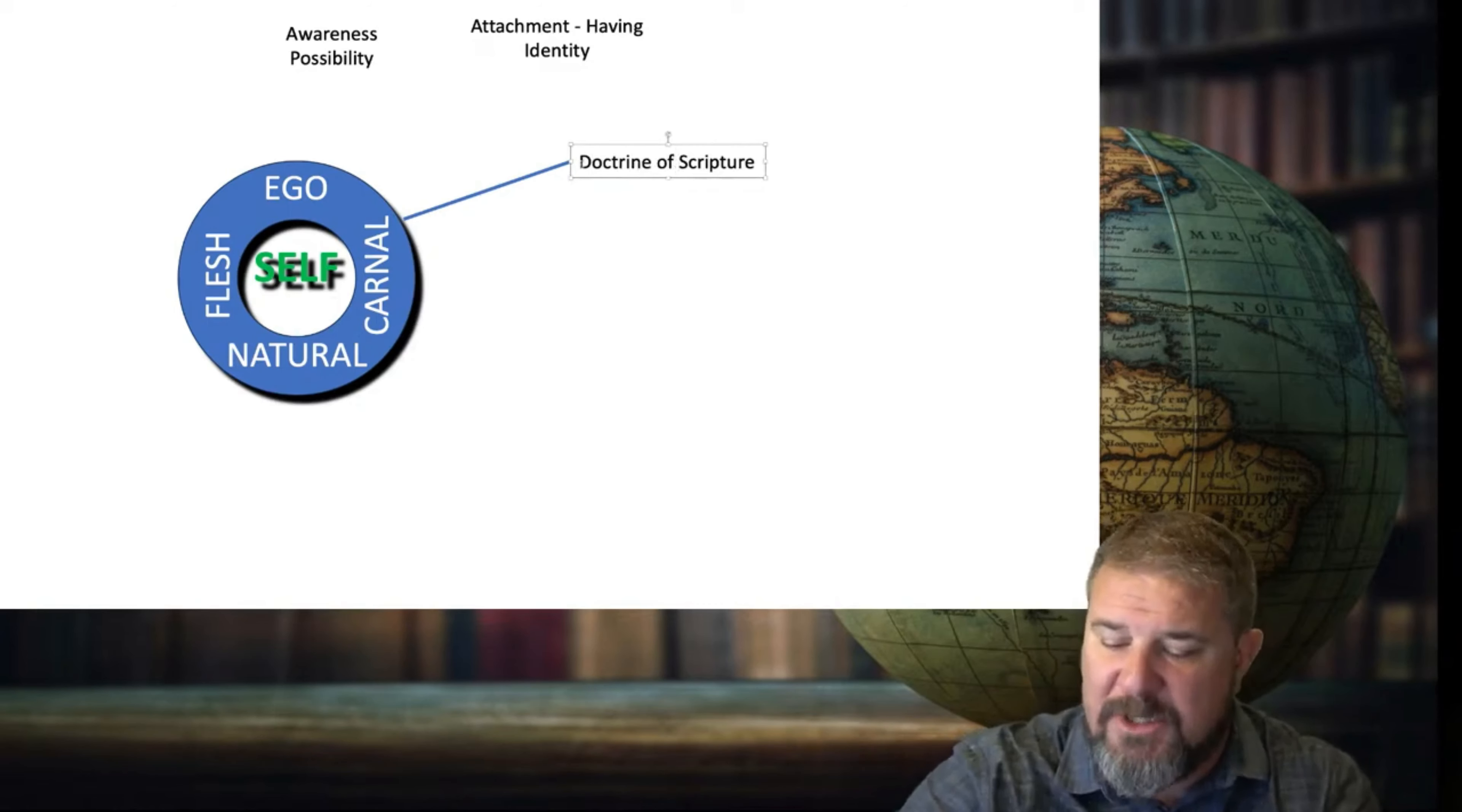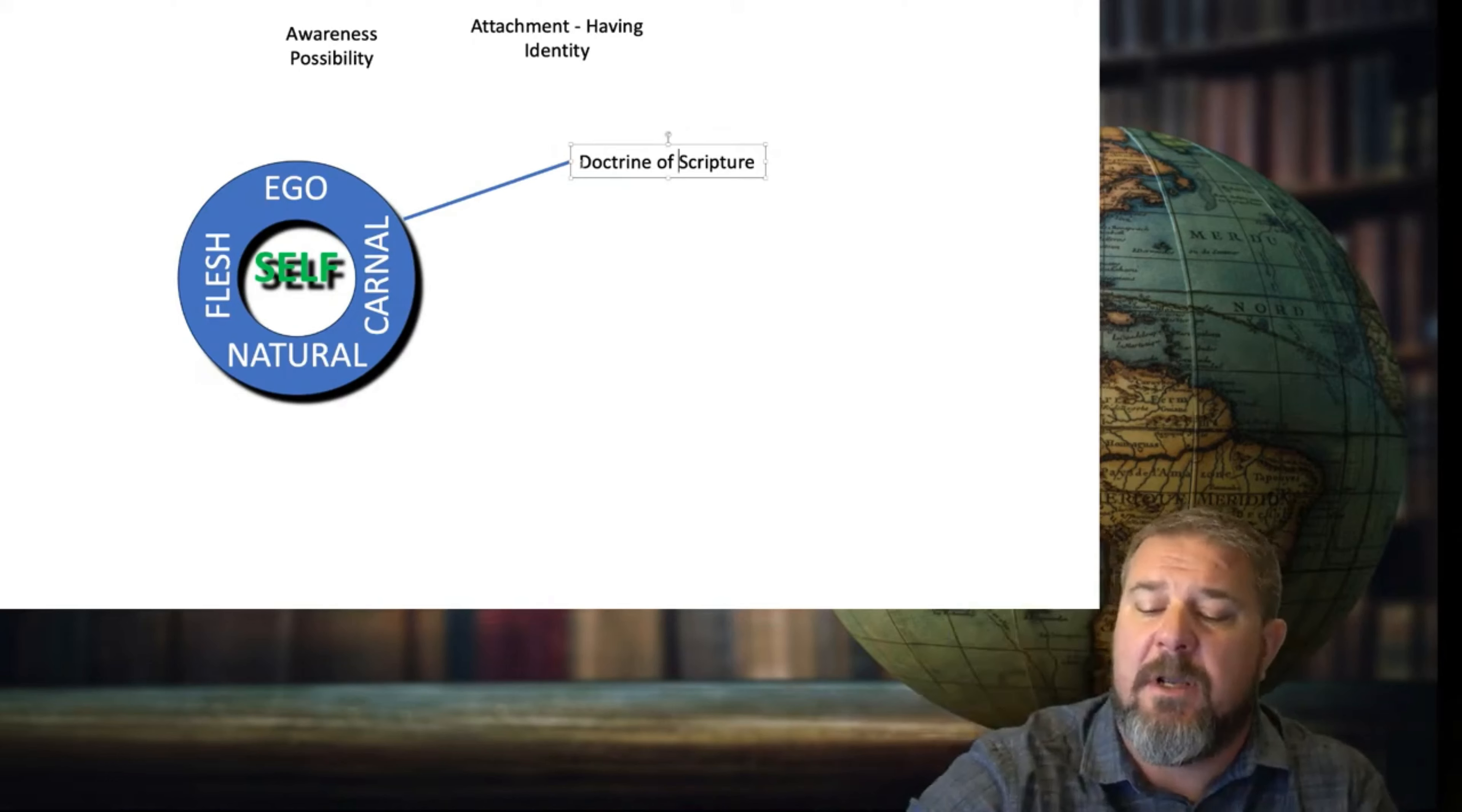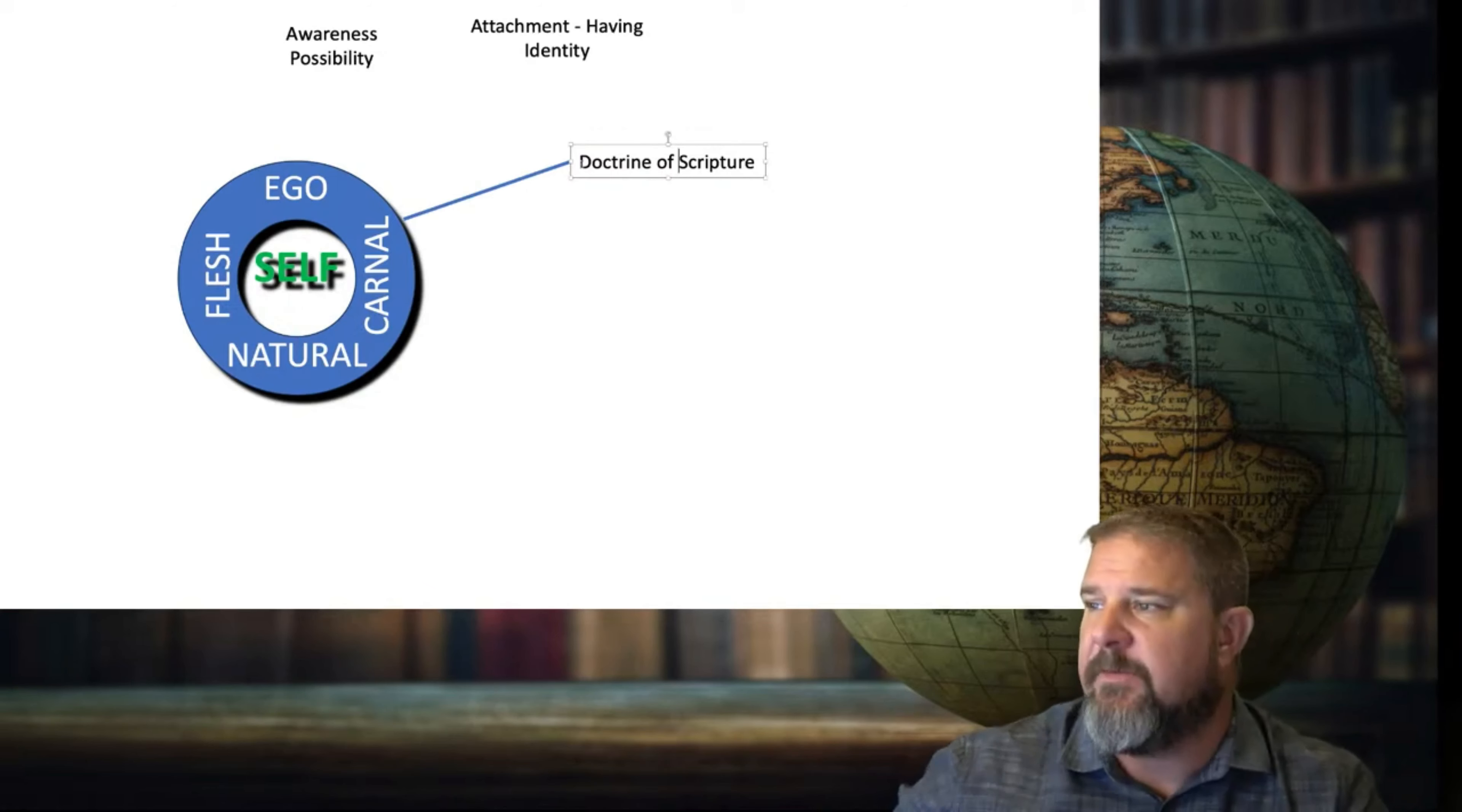Doctrine of scripture. Let's put it that way. So we're not actually talking about the Bible itself. We're actually talking about what you believe about the Bible. We believe the Bible consists of 66 books and was inspired by God through the men, through the original autographs, anywhere from 3,000 to 2,000 years ago. All that stuff. All that stuff that you think you're supposed to believe.